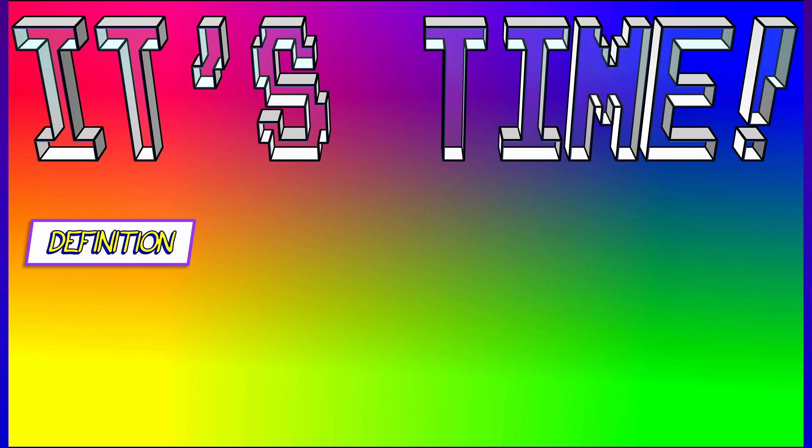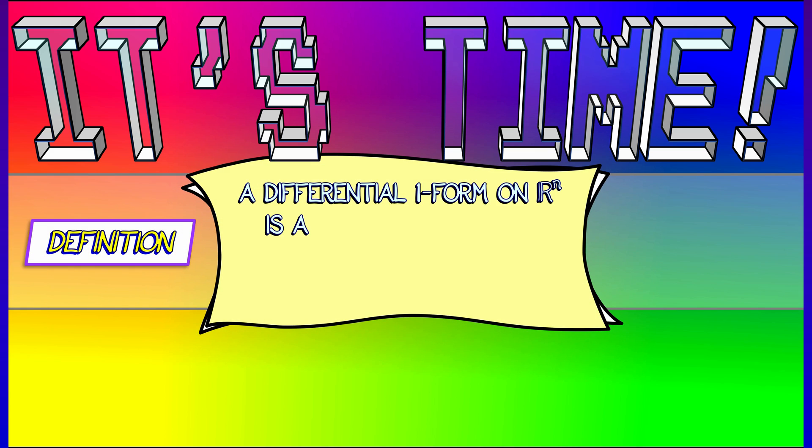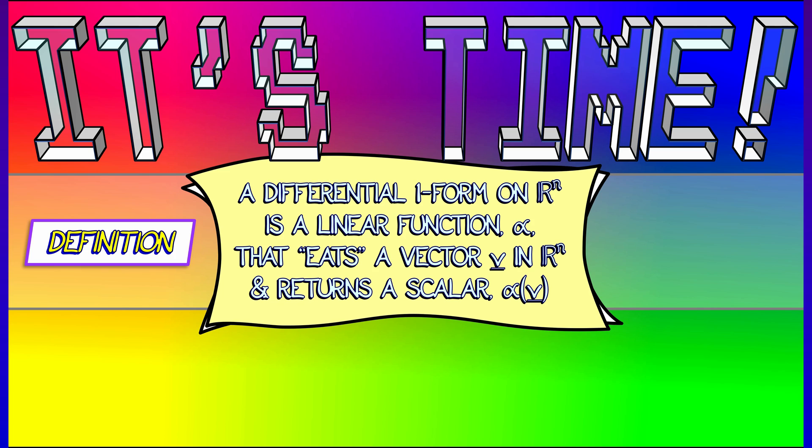Here is a formal definition. A differential one form on R^n is a linear function, alpha, that eats a vector v in R^n and returns a scalar, alpha of v. It's got to do so in a linear fashion. Is that it? Yes, that's it.